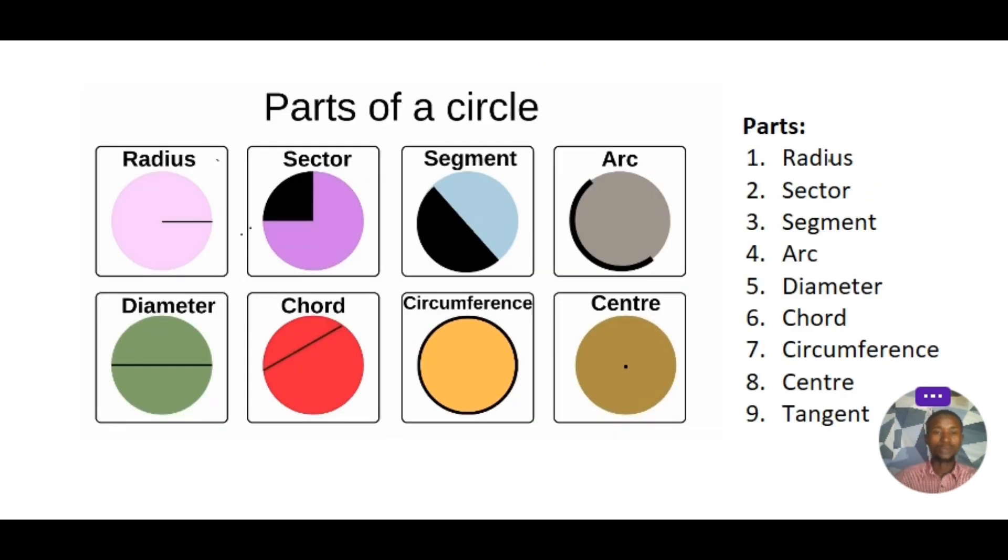So parts of a circle. The first is radius. A radius is the distance from the fixed point, from the center of the circle to a point on the circumference, and we can refer to that as small r. That's our radius.